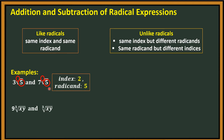Another example: 9 cube root of xy and 3 cube root of xy. Look at the indices — they are the same. Look at the radicands — they are also the same. Therefore, this is also an example of like radicals.